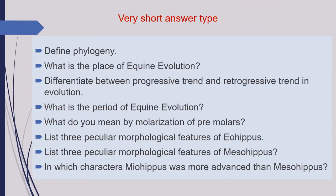These questions are framed into three categories. The first category of questions are short answer questions, which you have to answer in two to three lines. The first question of this category is: define phylogeny.